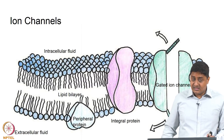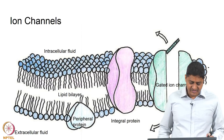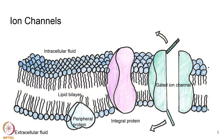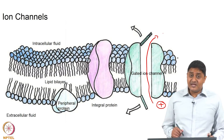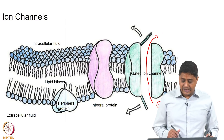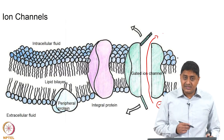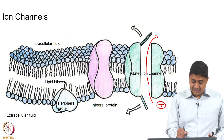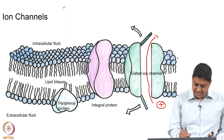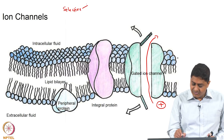We discussed the plasma membrane in the previous class. Suppose an ion has to be transported from outside of the cell to inside the cell — there must be a channel, there must be a protein that allows this transport to happen. Note that these channels may be selective, and in general these channels are selective, and this selectivity may be due to size or may be due to type of charge.